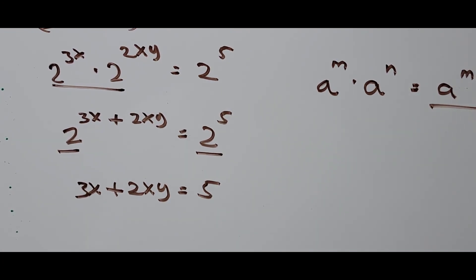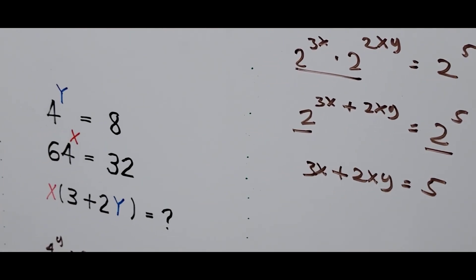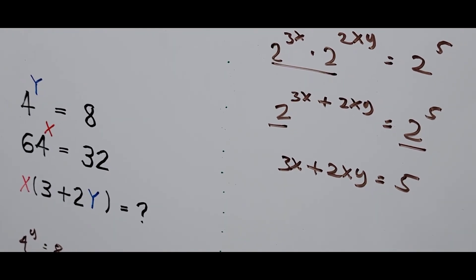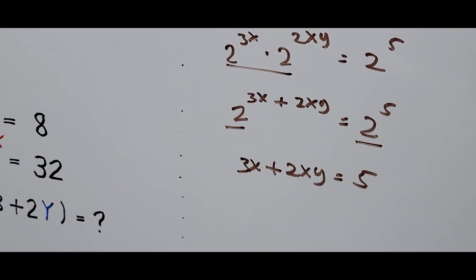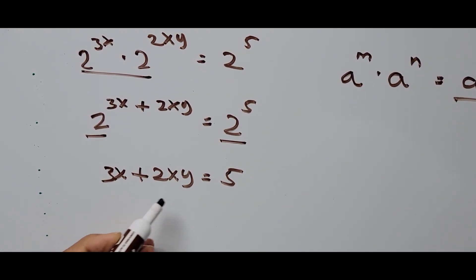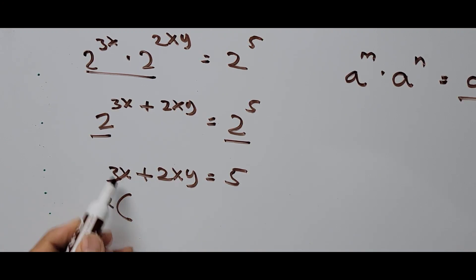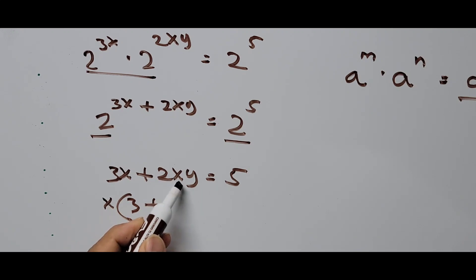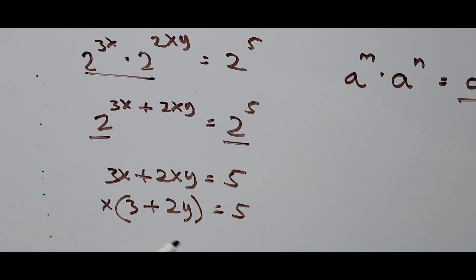This equation 3x plus 2xy equals 5 looks almost exactly like what's being asked. We factor out x from the left side: x times the quantity 3 plus 2y equals 5. This is our answer for the first solution.